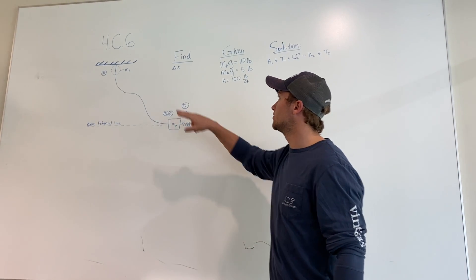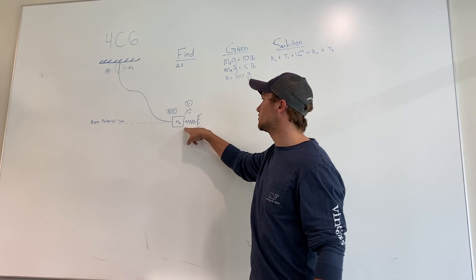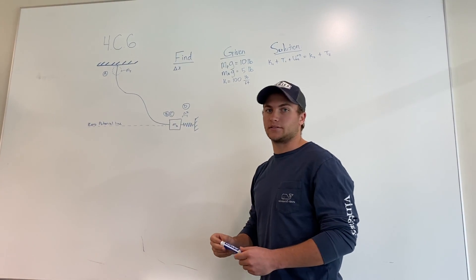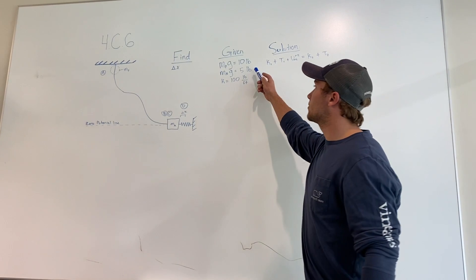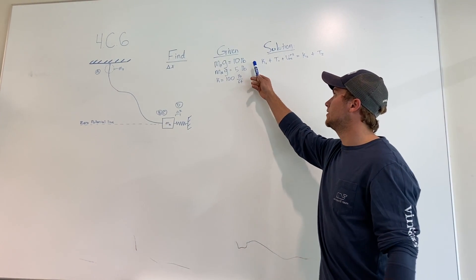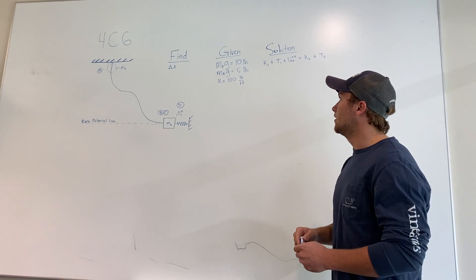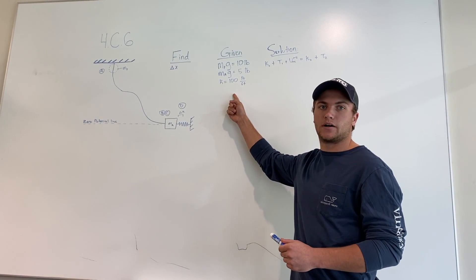Attached to mass A is a spring. The whole problem, you're going to have to try to find the delta x of the spring using the work energy equation and the impact equation. So the given values: the mass P gravity is 10 pounds, and the mass A gravity is 5 pounds, and the spring constant is 100 pounds per feet.